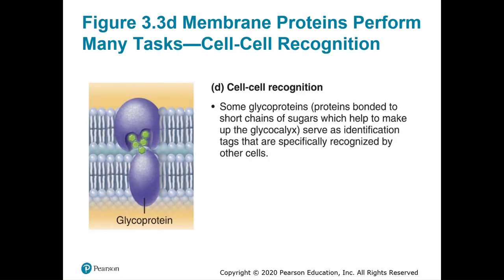For cell recognition, some of the glycoproteins — glyco meaning sugar, protein meaning protein — are on the cell surface and can be used to recognize other cells. This becomes really important when recognizing foreign cells: if bacteria enter the system and lack these glycoproteins or have a different type, it sends red flags throughout the body and allows the immune system to get involved.